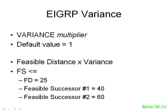Let's look at an example. Let's say our feasible distance is 25. Starting with the default value of 1, 25 times 1 equals 25. This is the value that our feasible successors have to be less than or equal to. Here are our two feasible successors, and you can see their metrics are higher than 25. So by default, EIGRP is not going to load balance between these three routes. By default, EIGRP will only load balance between equal cost paths, because it has to equal the feasible distance since we're only multiplying by 1.